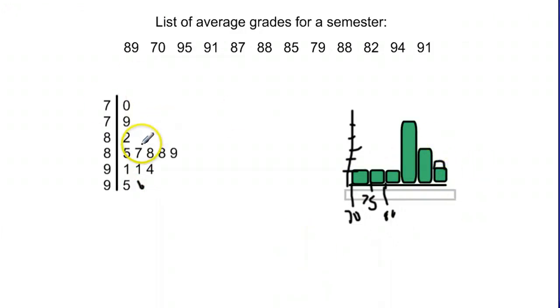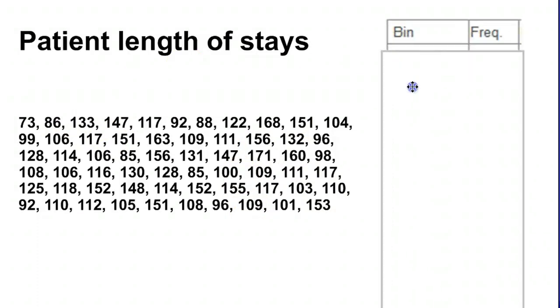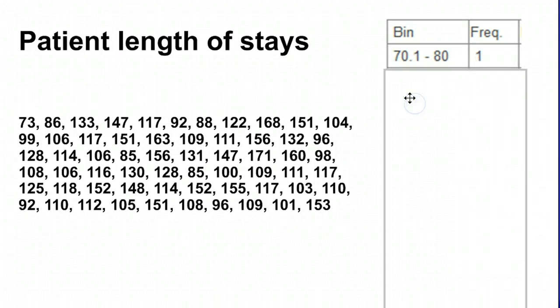So histograms and stem plots can be very similar. The reason why we want to have a histogram instead of a stem plot sometimes is when we have very large lists, for example. Very large lists of numbers making a stem plot would look a little bit ridiculous. So what we do is we take one group at a time. In this case, we're breaking it down into bins or groups of 10 at a time. So the 70 to 80 bin, all numbers that are above 70 but 80 or less, we count them up in this whole big list and we see that we only have one of them. So 73 is the only one between 70 and 80. We put a frequency of 1.